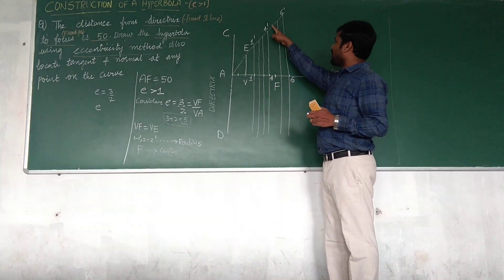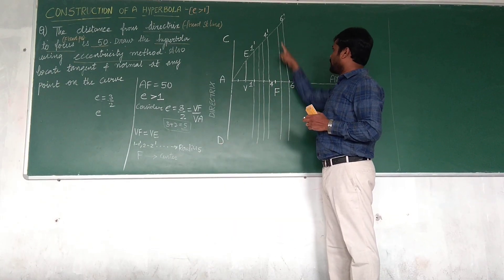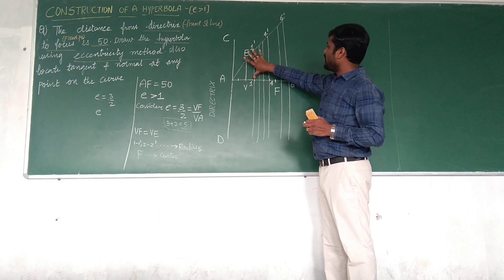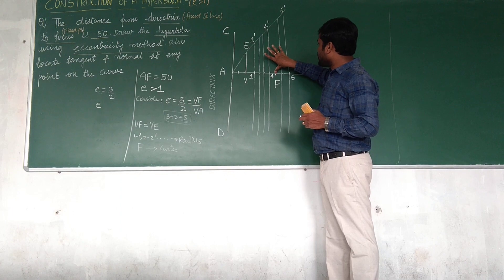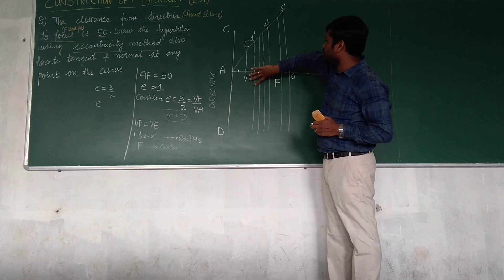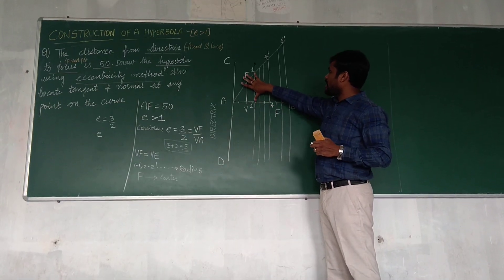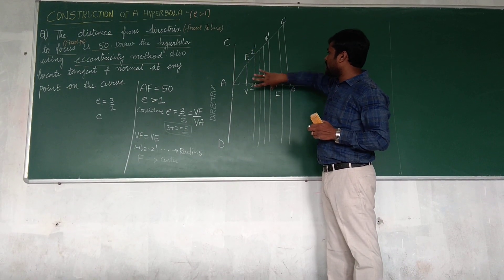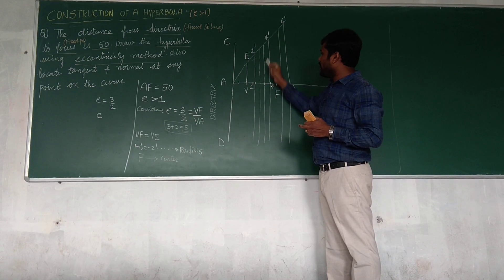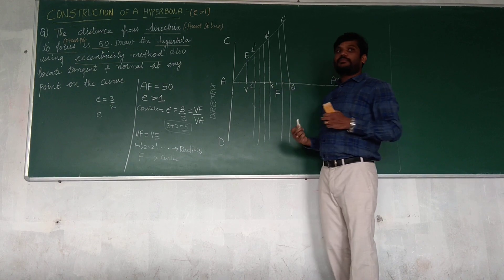My F is here. You can take a pencil, F also in line. 1, 1 dash as radius, which you are using a compass, F as center, cutting either sides of the arc. Which arc measurement you are taking, take it onto F and cut that arc above and below, above and below.